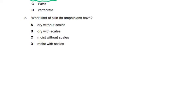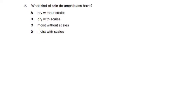Question five: what kind of skin do amphibians have? This is factual and must be memorized. The choices are moist with scales, dry without scales, dry with scales, and moist with scales. Amphibians have moist skin without scales — this is rote learning.